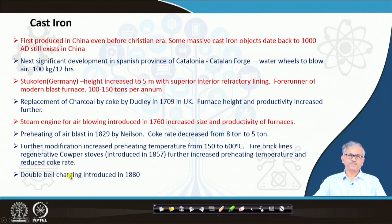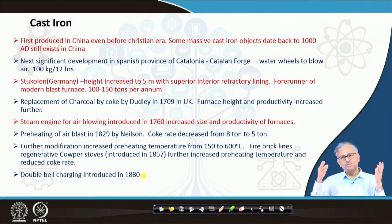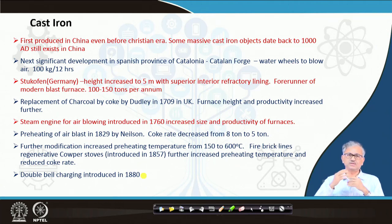The Cowper stove is the modern stove, but with much higher preheat temperature — you can now attain 600°C — which increased the preheating temperature and reduced the coke rate. Then came double-bell charging in 1880. The importance of the charging system is that otherwise it would pollute the atmosphere, because where you are charging, gas can escape through it, causing a lot of pollution. Once the double-bell top charging came, you can restrict gas leakage through the charging — good from a pollution point of view and also burden distribution.